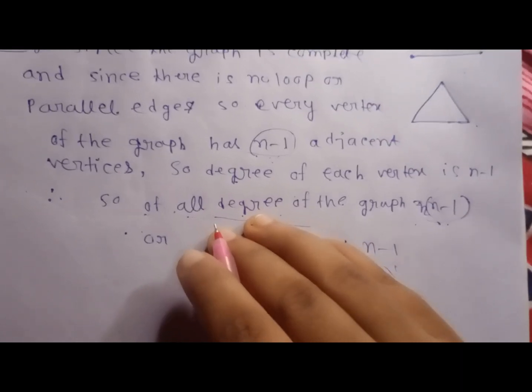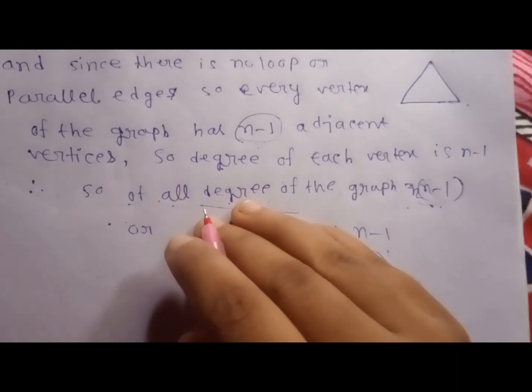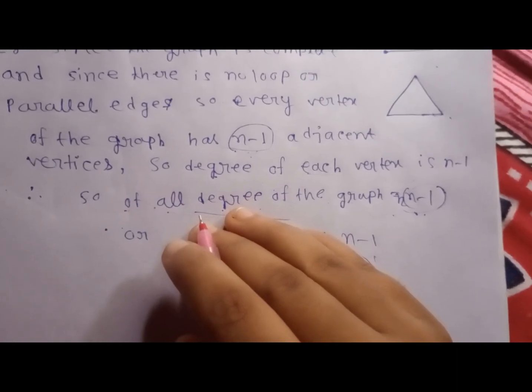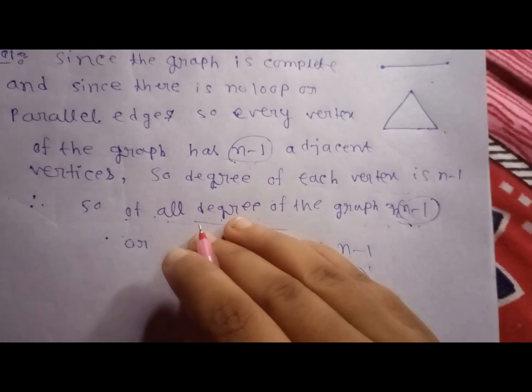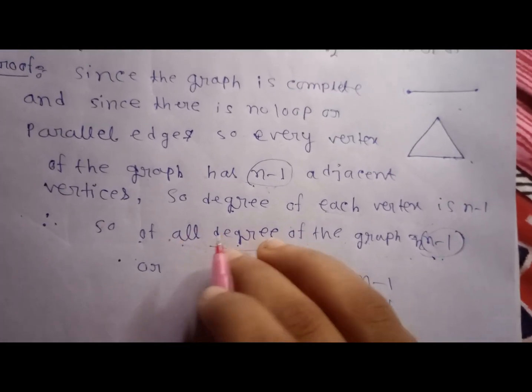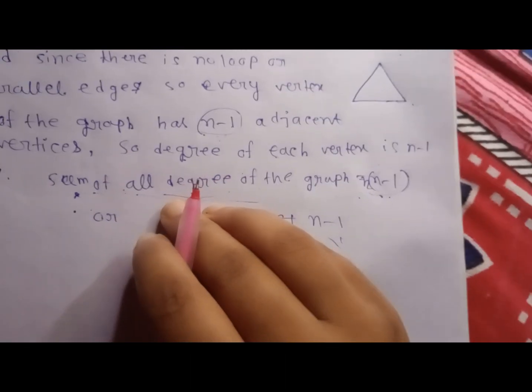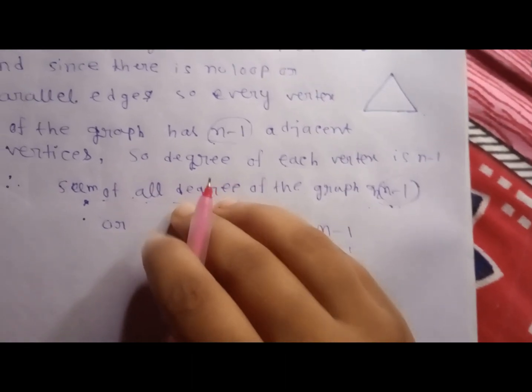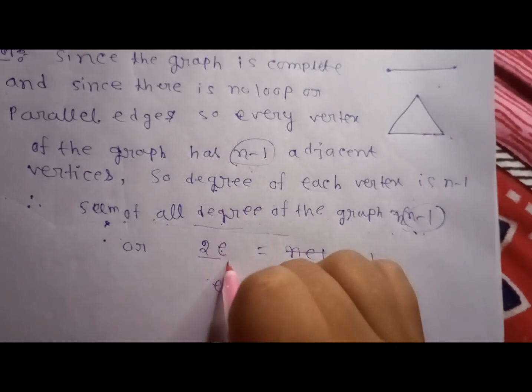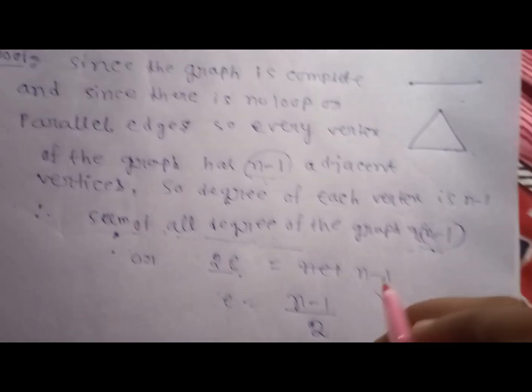Or we know the handshaking lemma: sum of degree of all vertices is twice the number of edges. So sum of all degrees of the graph is equal to 2e, and here n into n minus 1.